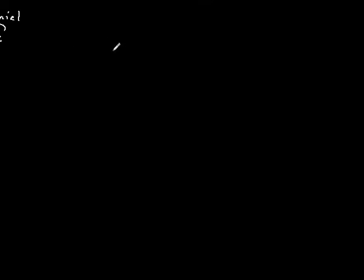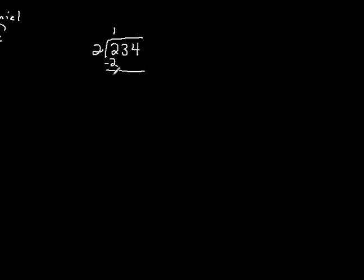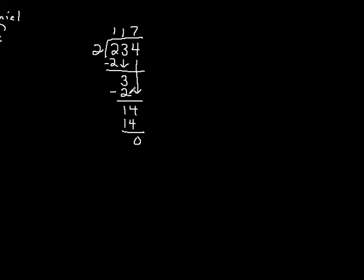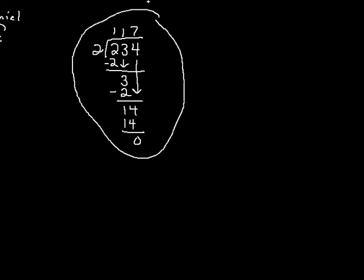Let's hop over here. Say I had 234 divided by 2. We would say 2 goes into 2 one time, 1 times 2 is 2. Then we subtract, get 0, and bring down to get a 3. 2 goes into 3 one time, 1 times 2 is 2. Subtract and bring down the 4. 2 goes into 14 seven times, 7 times 2 is 14 — until there are no more numbers to bring down, unless there's a decimal point and you add zeros. We're going to do the same thing with polynomials.